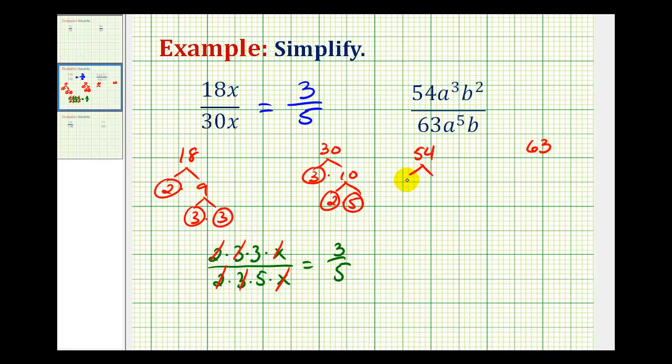So 54 would be 9 times 6. Neither of these are prime. 9 is 3 times 3, and 6 is 2 times 3. These are all prime. 63 would be 7 times 9. 7 is prime, and 9 would be 3 times 3, which are both prime.